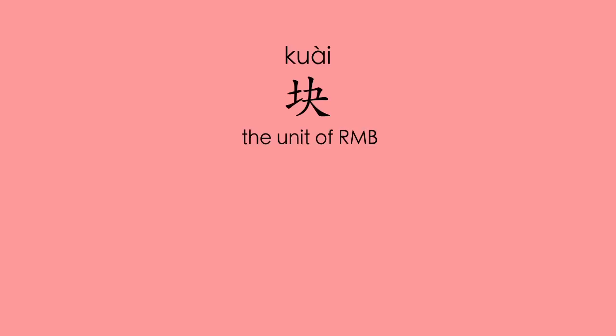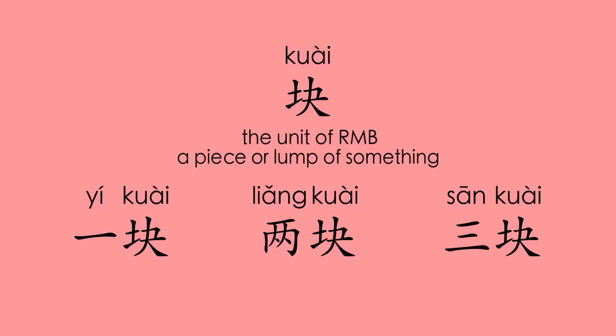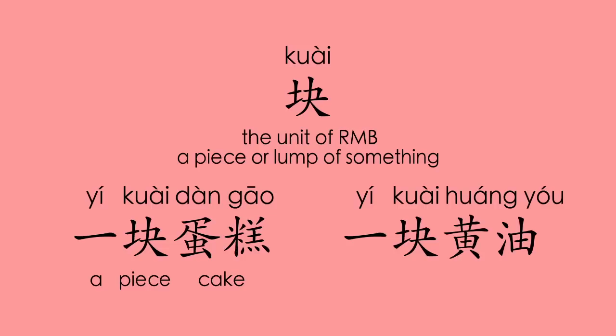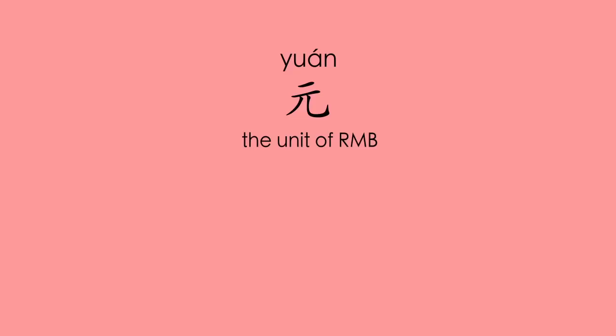块 — the unit of RMB, or a piece or lump of something. 一块, 两块, 三块 (one, two, three RMB). 一块蛋糕 (a piece of cake), 一块黄油 (a lump of butter). 元 is also the unit of RMB, but 元 is used more in formal situations like in the bank or for written use. 块 is normally used for speaking.